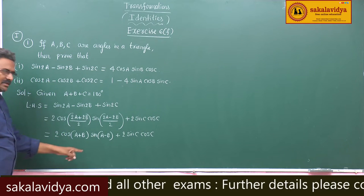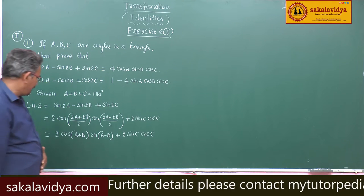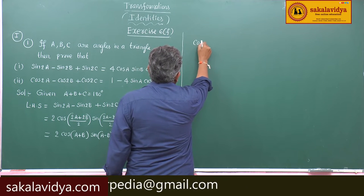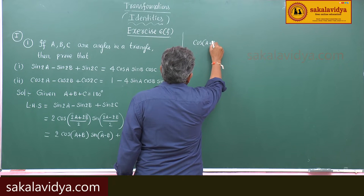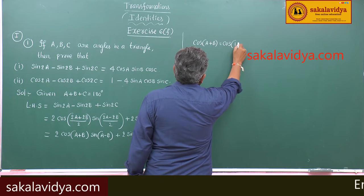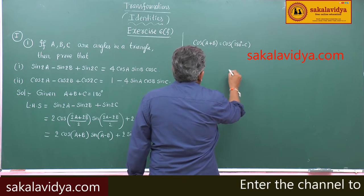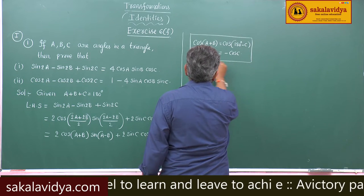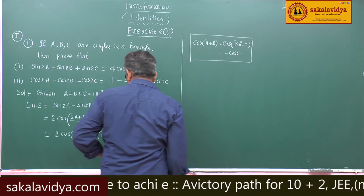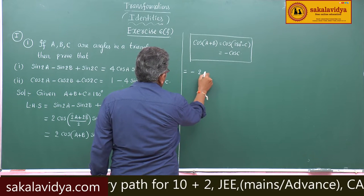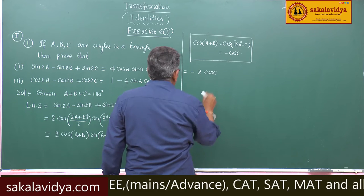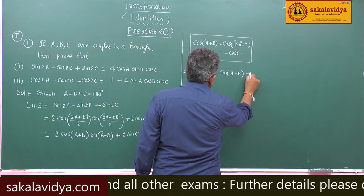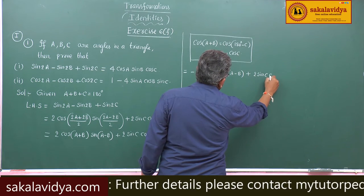Let us change cos of A plus B. Since A plus B plus C is equal to 180 degrees, A plus B is equal to 180 degrees minus C which equals minus cos C. So cos of A plus B is replaced by minus cos C. That means minus 2 cos C sin of A minus B plus 2 sin C cos C.